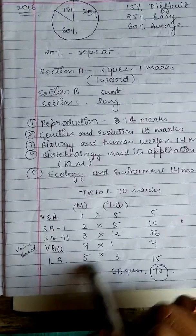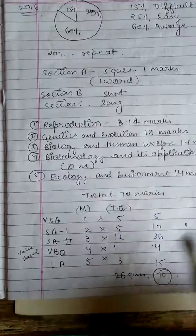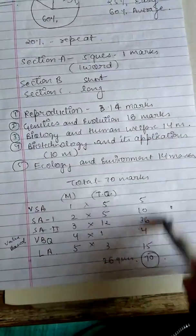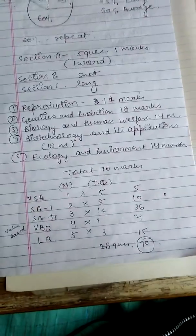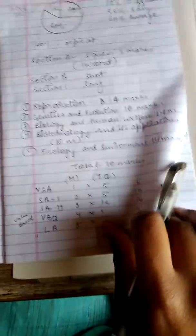Long answers are 5 marks questions. Total 3 questions. Means, 15. So now it all accumulates to be 70 marks questions. Total, 26 questions are there of 70 marks.